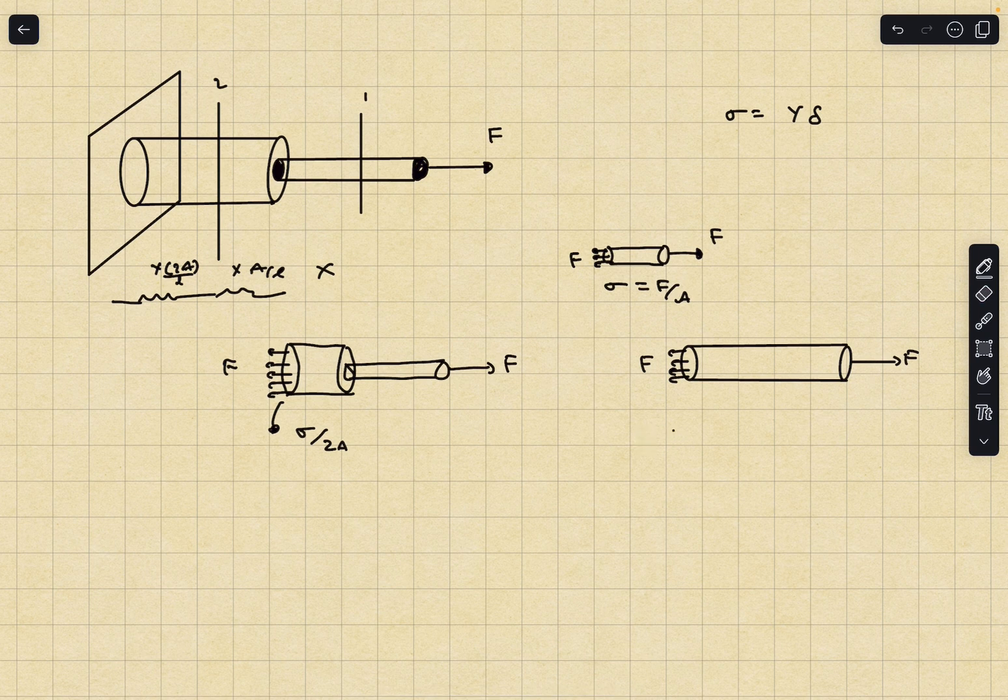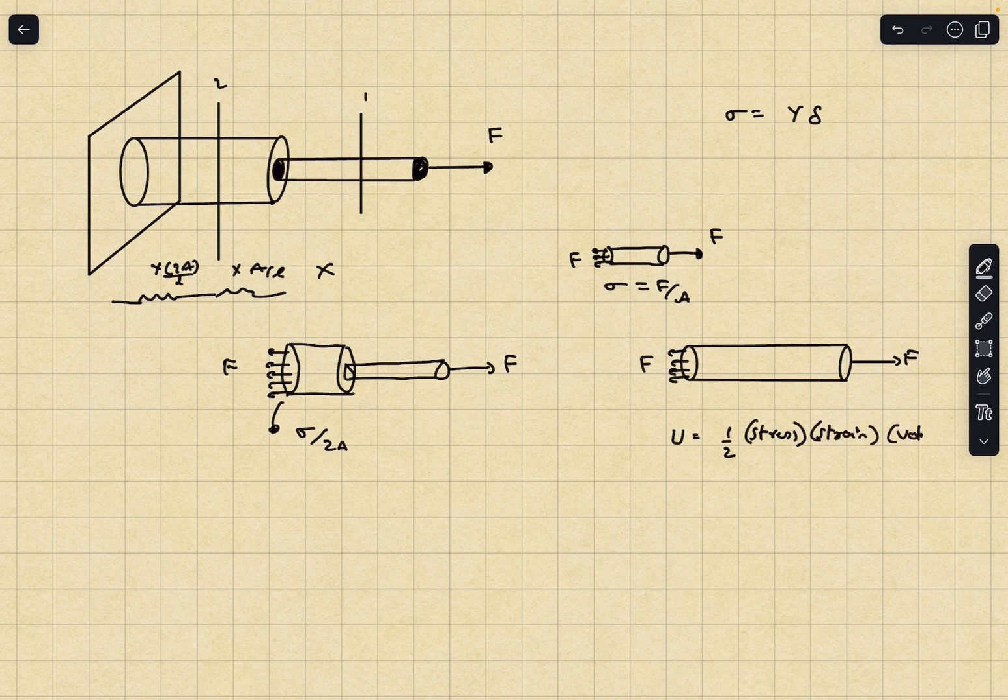Now we can easily write the elastic potential energy for this rod. It is going to be half stress times strain. This is the elastic potential energy stored per unit volume, so I have to multiply this with the volume of the rod as well.